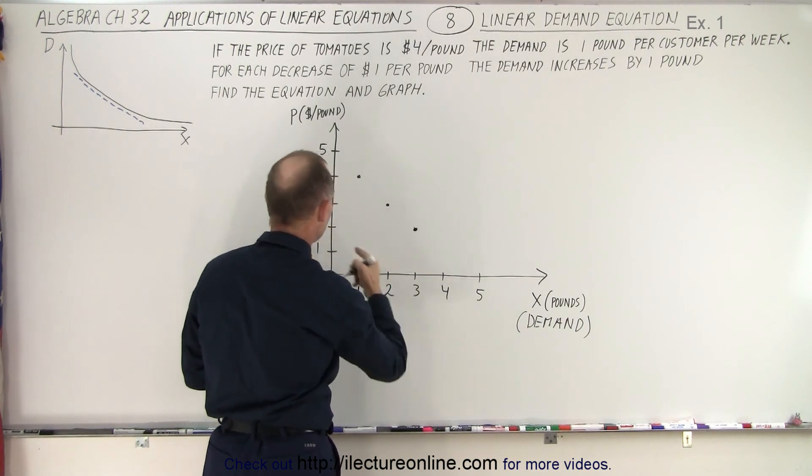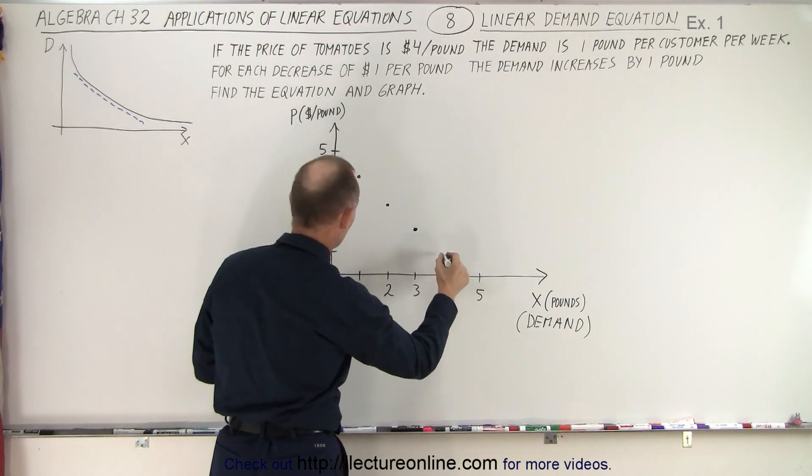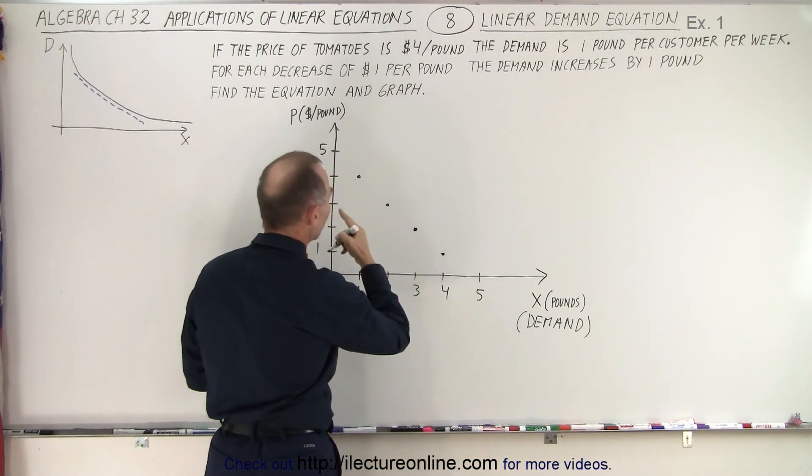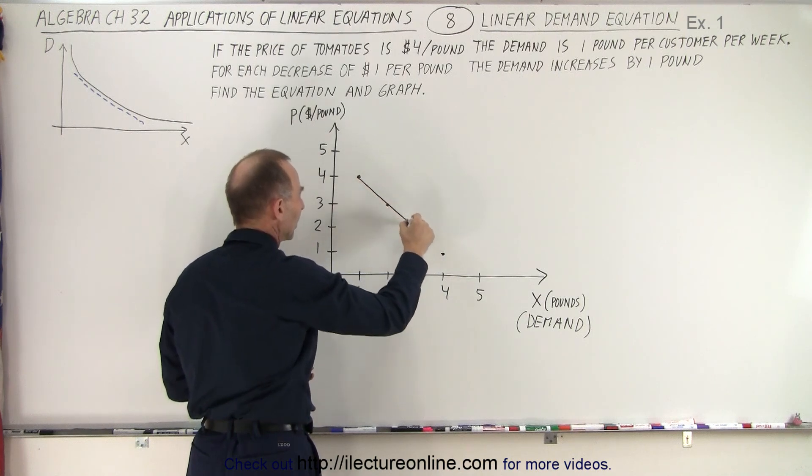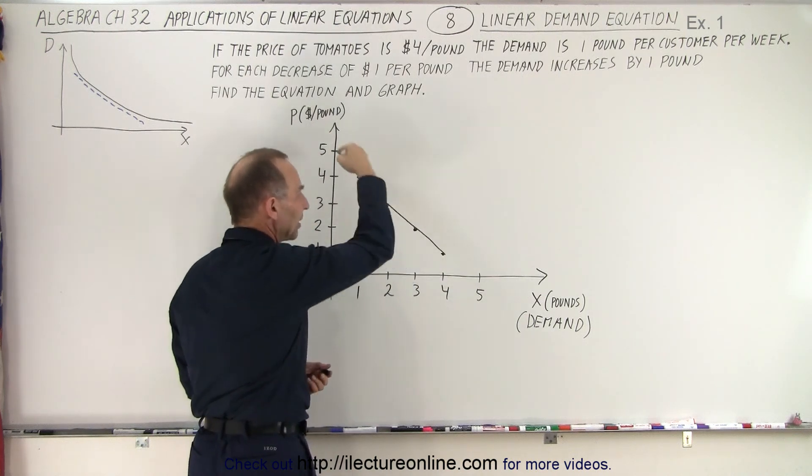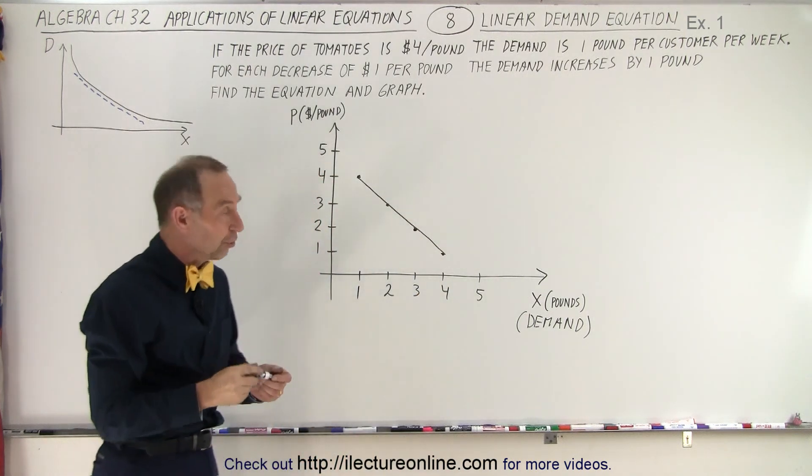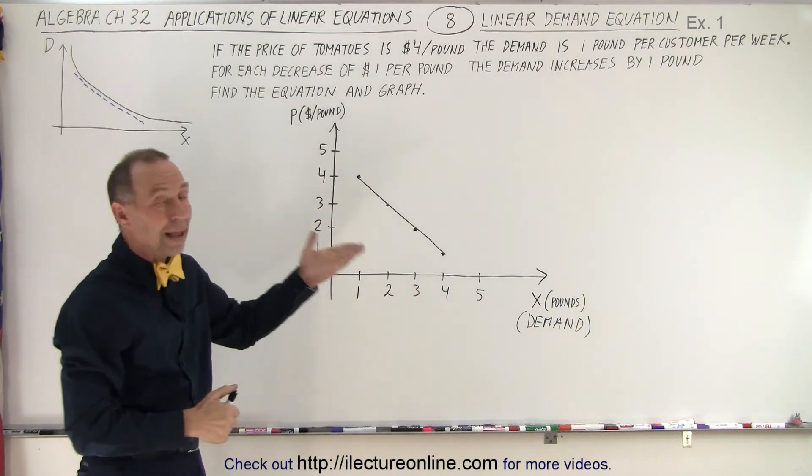If it goes down another dollar, the demand goes up another and so forth. But notice now we have an additional problem. So first let's go ahead and combine these and notice we have a straight line connecting those points. So we have what we call a linear demand equation.